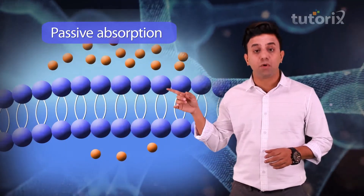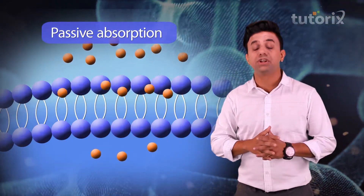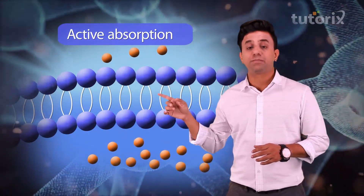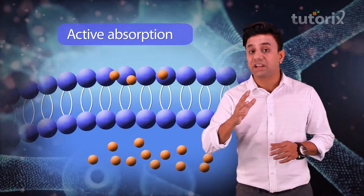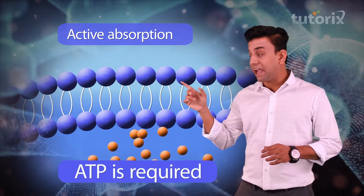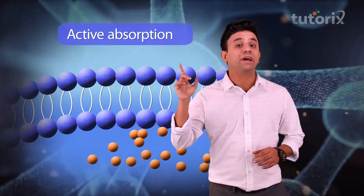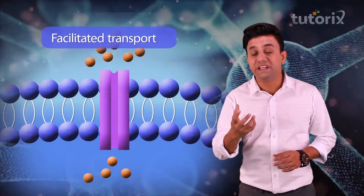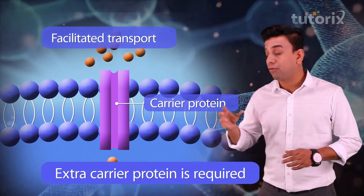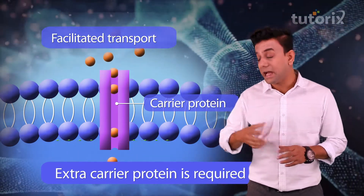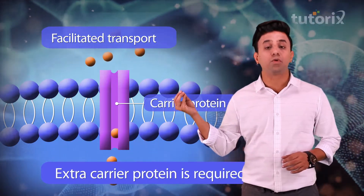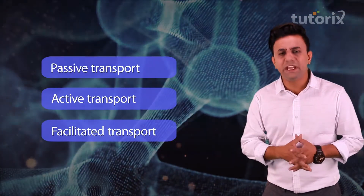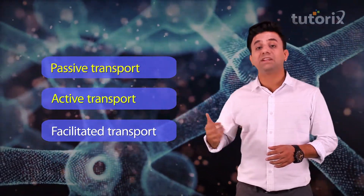When we say passive transport, there will be no active energy — that is, no ATP required for this transport. When we say active transport, ATP will be required for this transport, and hence this is the process which requires expenditure of energy. The third one, facilitated transport, means that an extra carrier protein will be required for the molecules to be taken across the barrier.